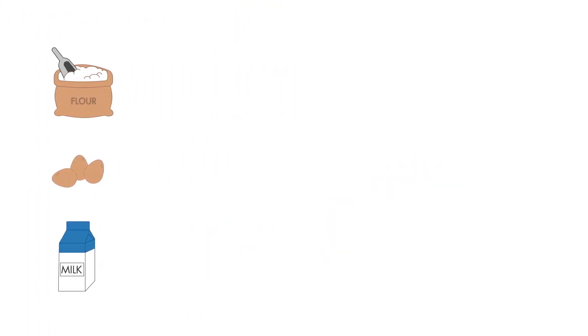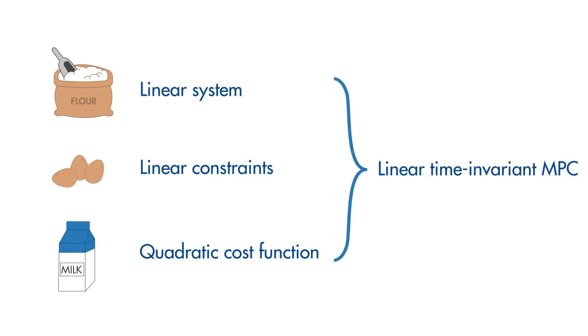Similarly, if you have a linear system that is represented by a linear plant model and you have linear constraints and a quadratic cost function, then you can use a linear time invariant MPC to control your system.